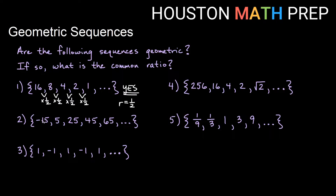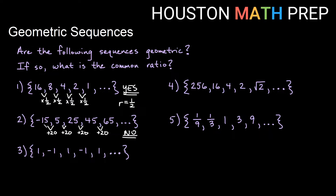For the second one: negative 15, 5, 25, 45, 65. There's a definite pattern going on here — the pattern is add 20. But because this is an add pattern and not a multiply-by-the-same-thing pattern, this one is actually arithmetic, not geometric. So no, this is not geometric because we don't multiply by the same thing to get from one term to the next consistently.